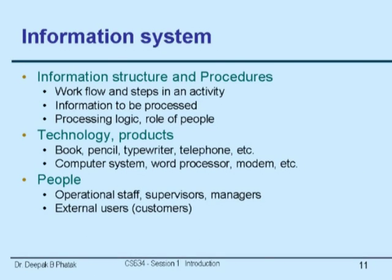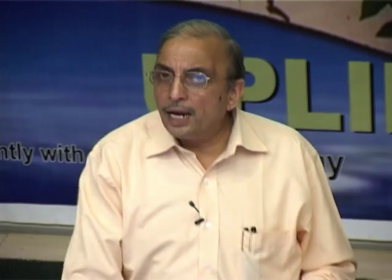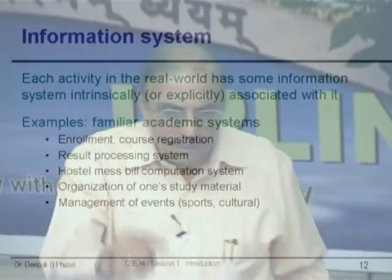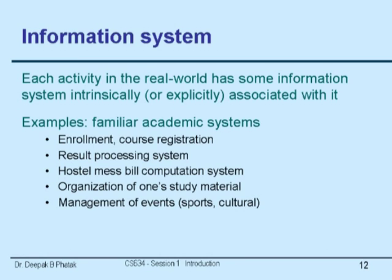Finally, people — operational staff, supervisors, managers, and external users or customers of an information system. A clerk at a Bombay VT railway reservation office will have a different process to follow. A customer standing in queue to make a reservation will have a different procedure. But both processes must be understood by the respective people who handle them.